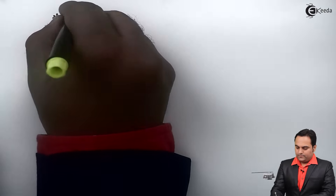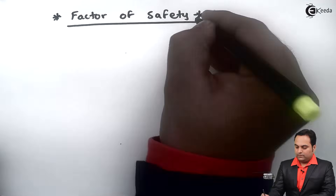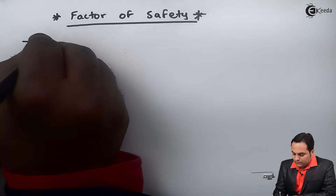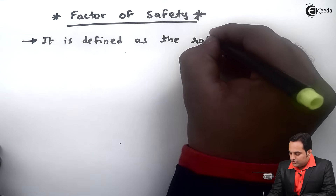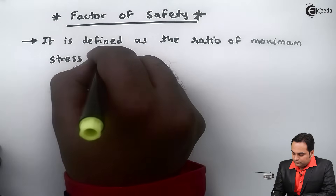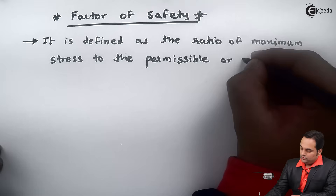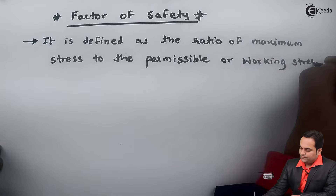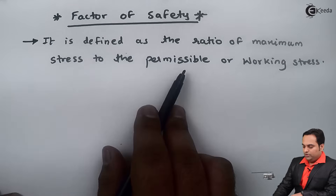Hello friends. In this video we will see what is meant by factor of safety with its complete explanation. Factor of safety is defined as the ratio of maximum stress to the permissible or working stress.